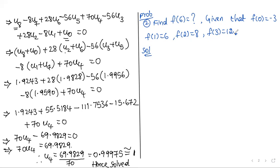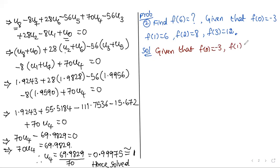The next problem: given that f of 0 is equal to minus 3, f of 1 is equal to 6, f of 2 is equal to 8, and f of 3 is equal to 12.